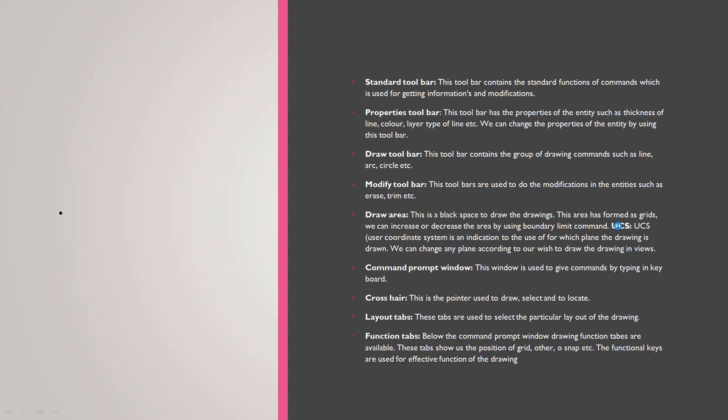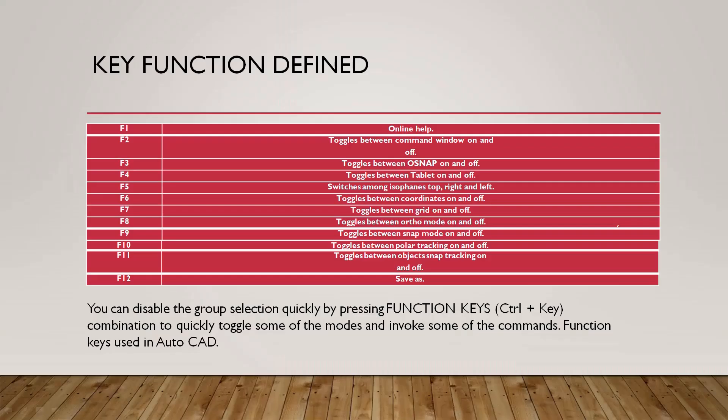You can use the layout tab to select a particular layout drawing. The function tab is available in the common property window. The function tab shows grid position and OSNAP settings.